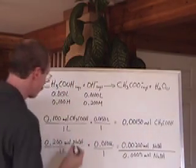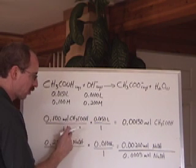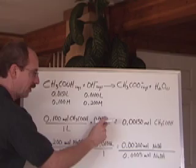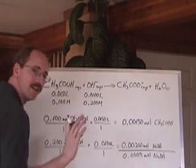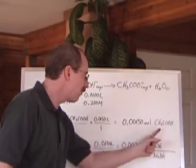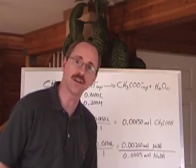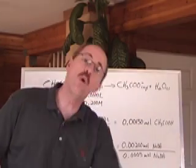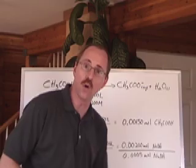If we find the moles of the acetic acid by just multiplying the concentration in moles per liter times the liters, we get this many moles. We do the same for the NaOH. But here's the story. Look at this. We have present, ready-to-react, 0.0015 moles of acetic acid. But we have more NaOH. We have 0.00200 moles of NaOH.